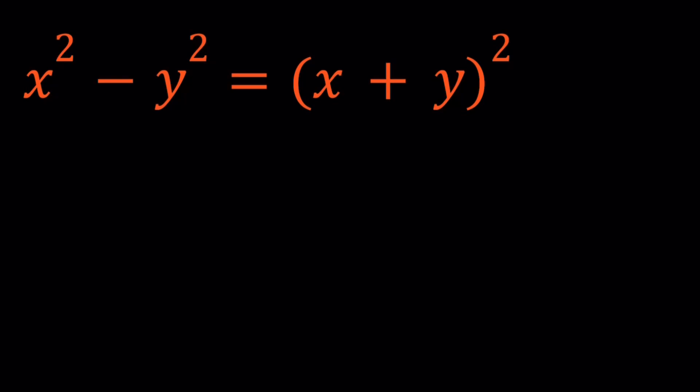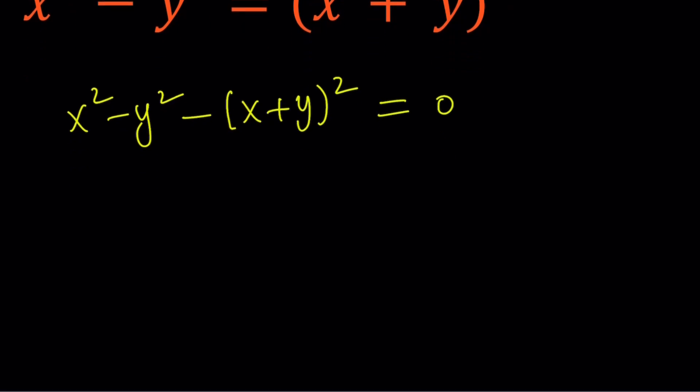We can go ahead and put everything on the same side. So write it x squared minus y squared, and then subtract x plus y quantity squared, and set it equal to zero. That's a good thing when you can set an equation equal to zero. That way, hopefully you can factor one side and go for the solutions that way.